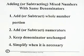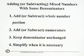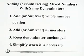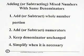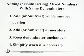For adding or subtracting mixed numbers with same denominators, we have four steps to follow. The first step: add or subtract the whole number portion. Second, add or subtract numerators. Third, keep denominator unchanged. Four, simplify when it is necessary.